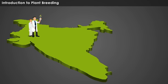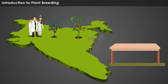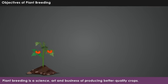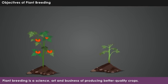At present, all plant breeding programs are more scientific and advanced to produce improved varieties of crops, which are more beneficial to humans than earlier times. In this lesson, let us discuss the objectives and achievements of plant breeding techniques in India. Plant breeding is a science, art and business of producing better quality crops which benefit the human race.